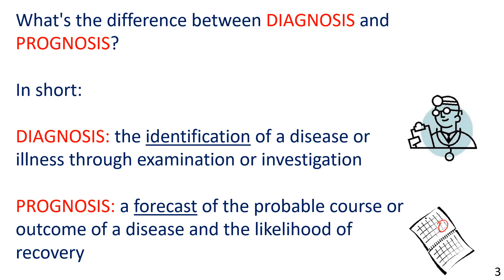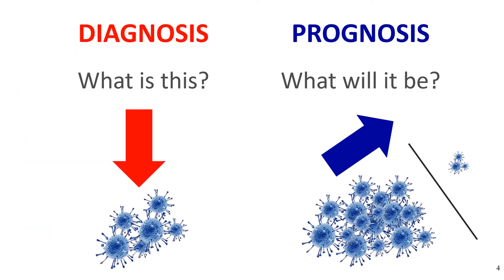So what's the difference between diagnosis and prognosis? In short, diagnosis means the identification of a disease or illness through examination or investigation. Prognosis means a forecast of the probable course or outcome of a disease and the likelihood of recovery. In other words, diagnosis means asking the question: what is this? The clipart shows a virus. And prognosis means asking the question: what will it be? The clipart shows two results — either the virus multiplies and increases, or it dies out.